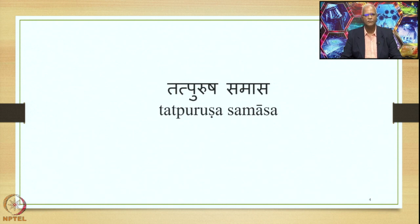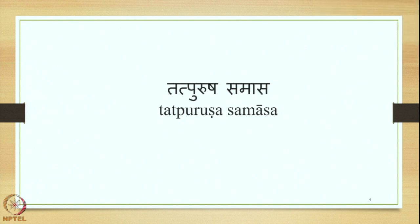We are studying the Tatpurusha Samasa. We have studied that there are four types of Samasas in Sanskrit: Avyaibhava, Tatpurusha, Bahubrihi, and Dvandva. Tatpurusha Samasa is an important type of Samasa. There are a number of Sutras dealing with the Tatpurusha Samasa, more in number than the other Samasas. The varieties of the Tatpurusha Samasa are also quite a few, making this a very important topic for our study.